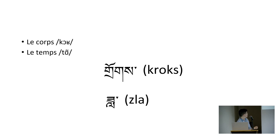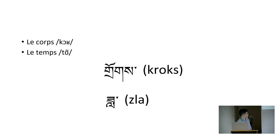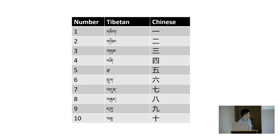Just as the French retain Latin spellings they don't pronounce — like the silent letters in words like 'temps' — Tibetan retains ancient spellings but doesn't pronounce them, as pronunciation changed over thousands of years. For example, 'KROKS' is spelled but pronounced 'cho.' Even more unusual: 'ZLA' should be pronounced something like 'sla,' but in modern Lhasa Tibetan, it's pronounced 'Da.' You have to memorize the rules for how to pronounce Tibetan.